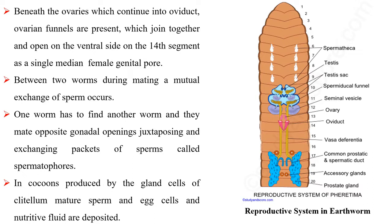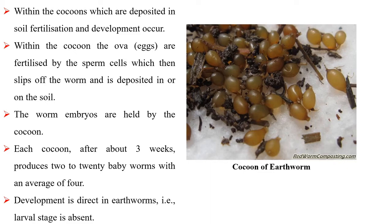Between two worms during mating, a mutual exchange of sperm occurs. One worm has to find another worm and they mate at opposite gonadal openings, exchanging packets of sperms called spermatophores. In cocoons produced by the gland cells of clitellum, mature sperm and egg cells and nutritive fluid are deposited. Within the cocoons deposited in soil, fertilization and development occur. The ova are fertilized by the sperm cells within the cocoon, which then slips off the worm and is deposited in or on the soil.